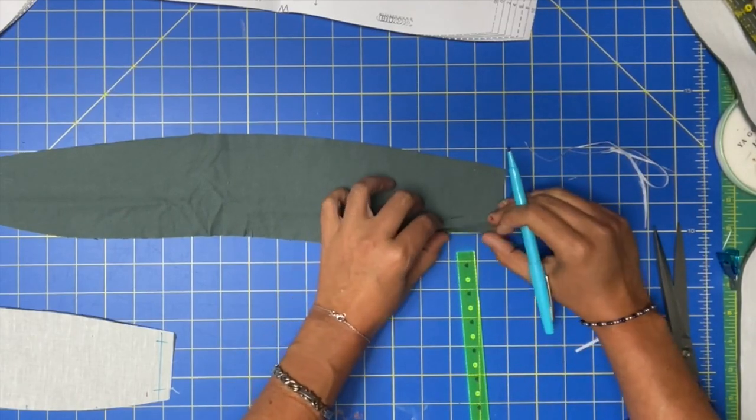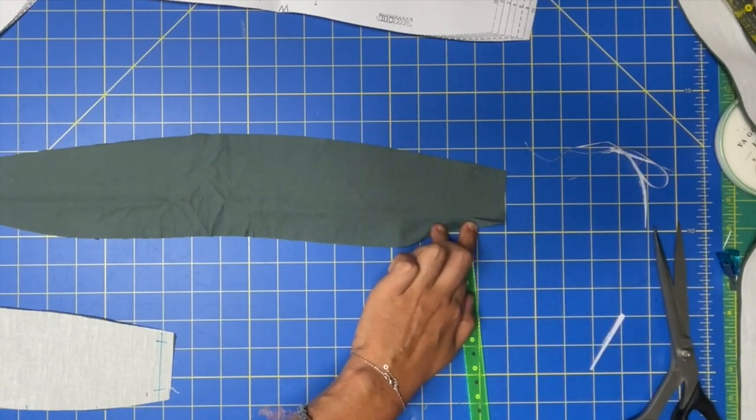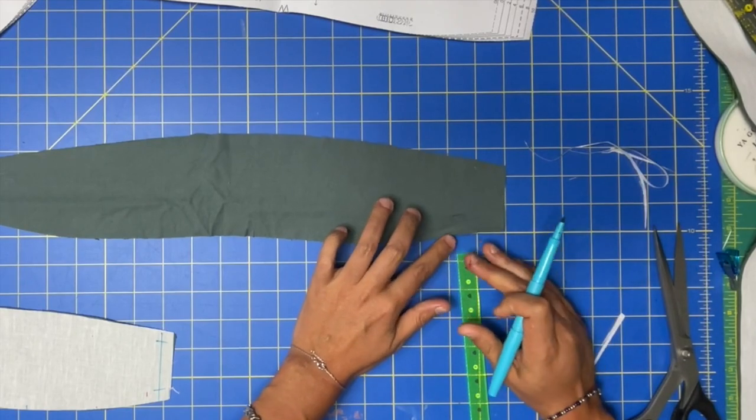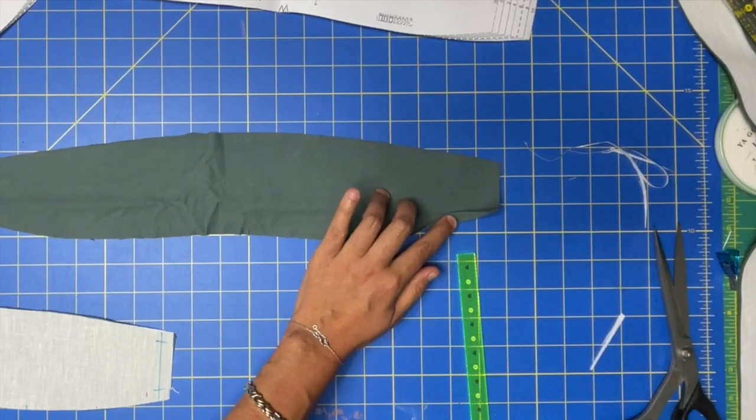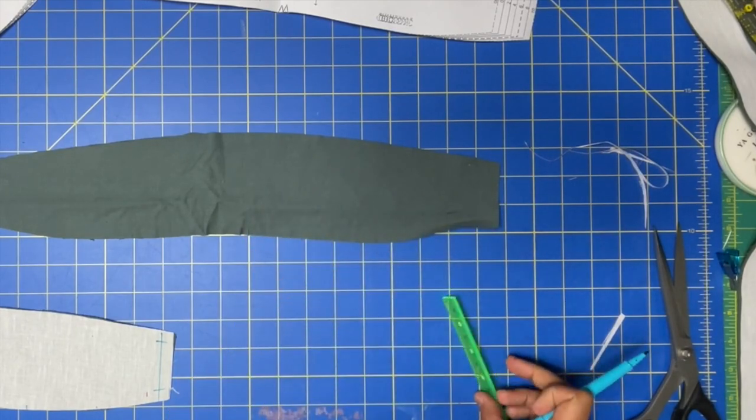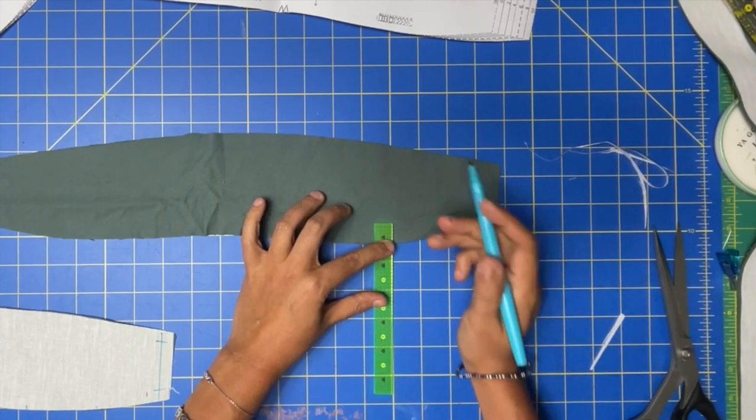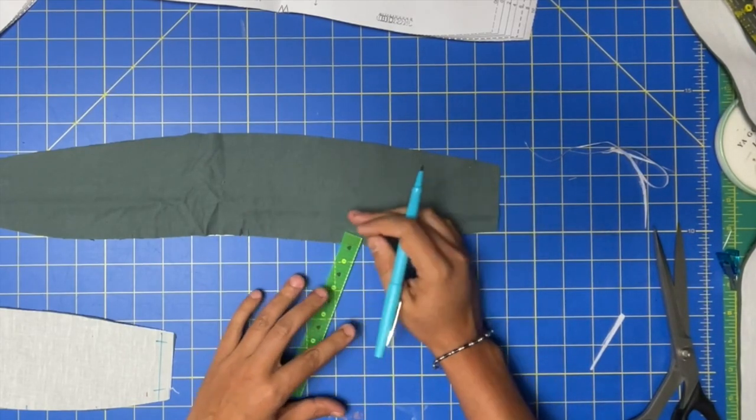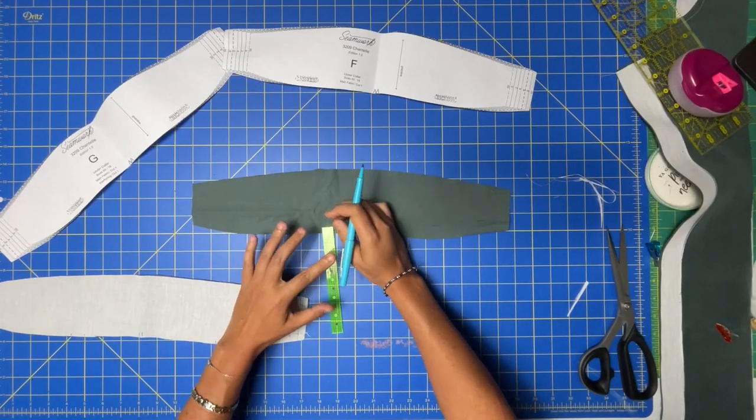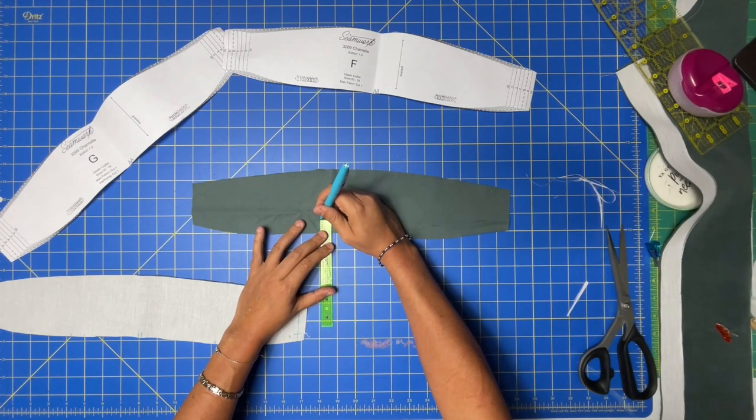If I mark like this and then I turn it up to meet that marking point, then I know that I'm getting an accurate mark. I don't want to mark on the right side of the fabric because that's the pretty part. I'm just going to mark a few places along here, and I'm going to go ahead and press it up now.